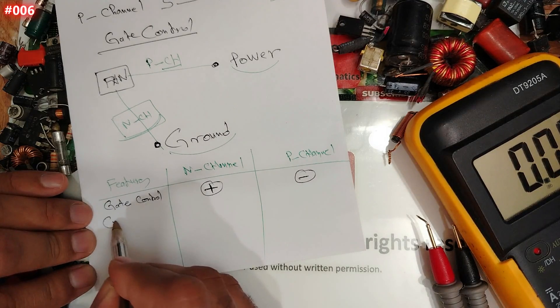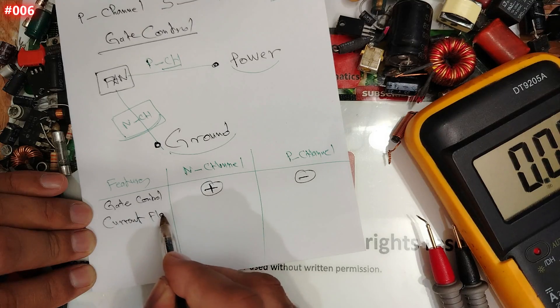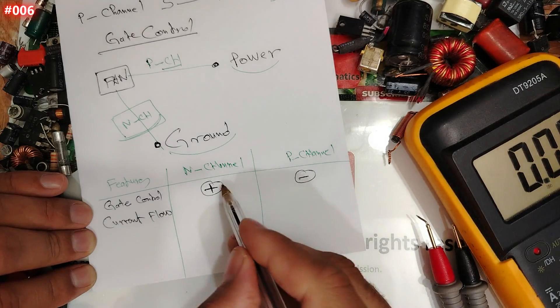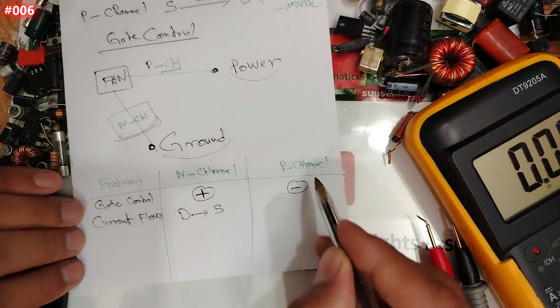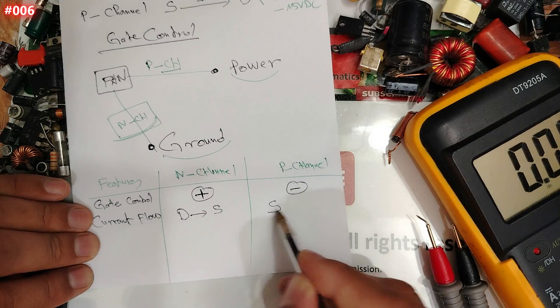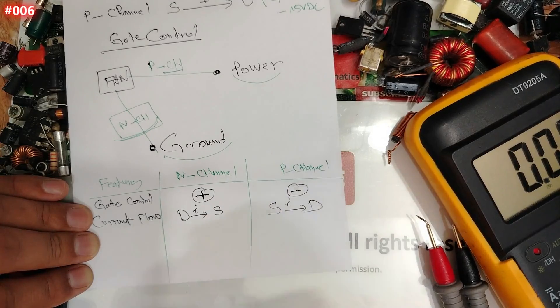For the current flow, please remember, this is the most important. For N-channel, from drain to source. For P-channel, from source to drain.